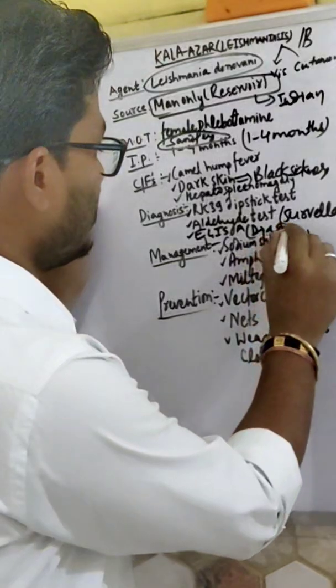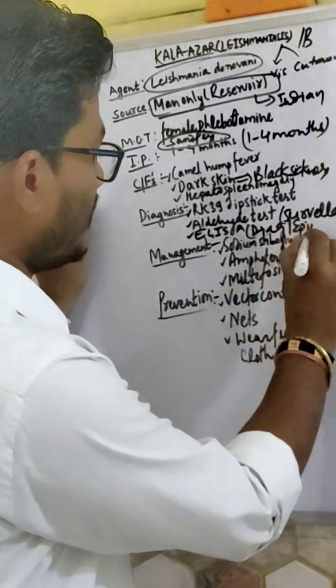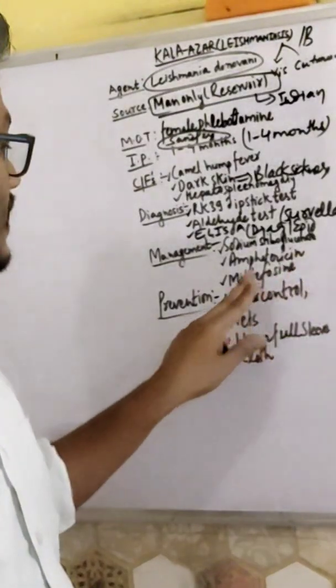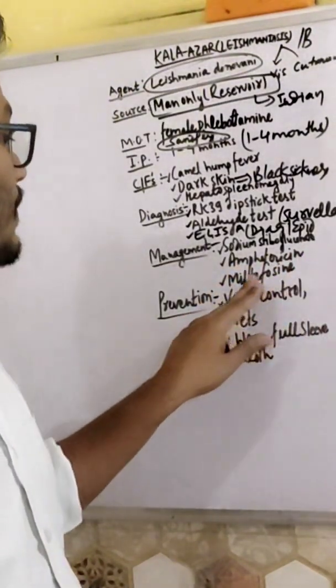Management includes sodium stibogluconate, amphotericin, and miltefosine. These are the drugs used for treating Kala-azar.